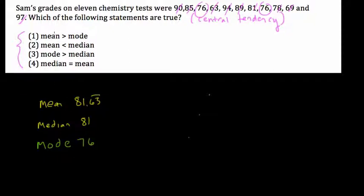So, now just compare these numbers. Is the mean greater than the mode? Is 81.63 greater than 76? Yes. 81.63 repeating is greater than 76. That's our answer.